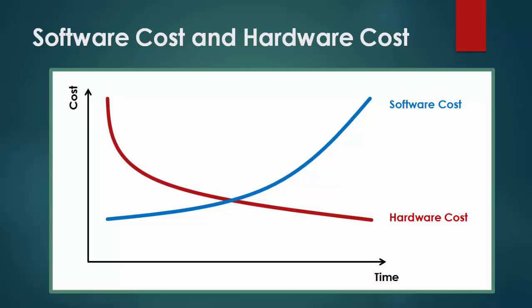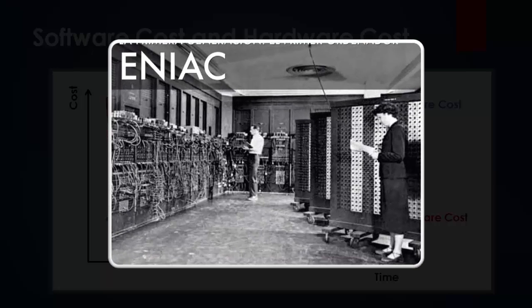Now, to make more sense of this hardware curve, I'll ask you a few questions. Question number 1: What was the physical size of the world's first electronic computer, ENIAC? What was its durability and how many operations could it handle? Try to Google and find the answers after watching this video.